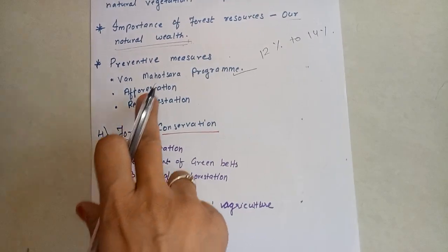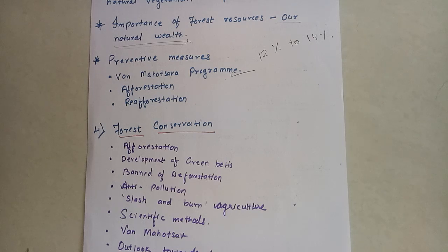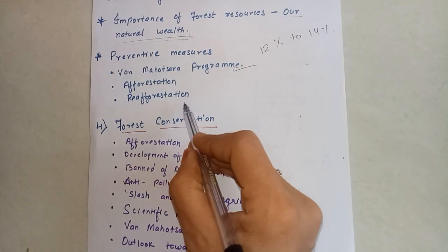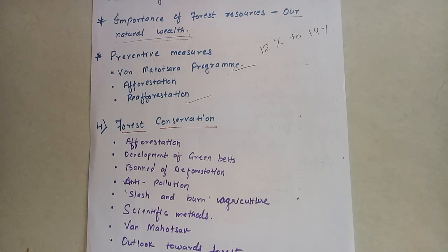Another scheme which has been adopted is afforestation. Afforestation means planting trees. Under this scheme, a program has been proposed to plant trees in Rajasthan, West Uttar Pradesh, and Kutch desert to prevent soil erosion. Another scheme which has been adopted is re-afforestation. Although slash and burn or zooming practice has been banned in northeast India, indiscriminate cutting of trees continues.